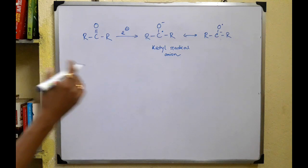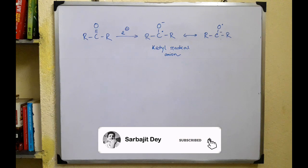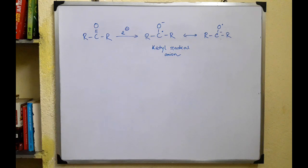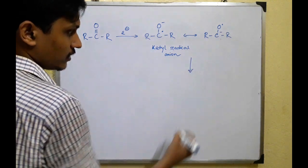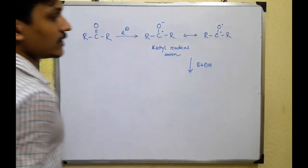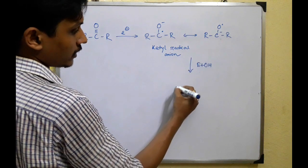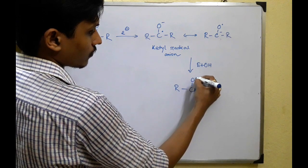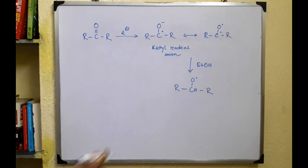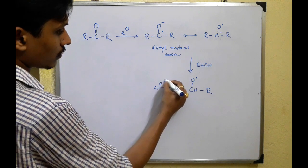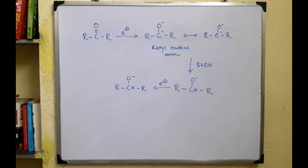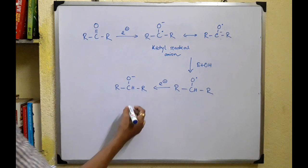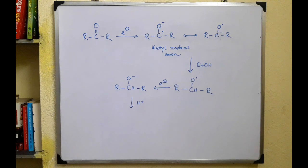The behavior of the ketyl radical anion depends on the solvent. In protic solvents such as ethanol, the ketyl radical anion is first protonated. After protonation, it accepts a second electron from the metal — usually sodium — to form an alkoxide. At the end of the reaction, this alkoxide on addition of an acid gives the final product, which is an alcohol.